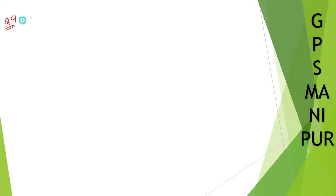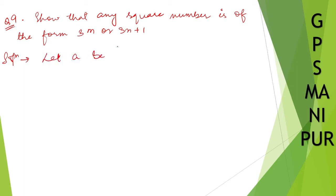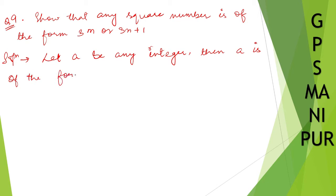Question number nine: show that any square number is of the form 3n or 3n plus 1. Solution: let a be any integer. Then a can be written in the form 3q, 3q plus 1, or 3q minus 1. If you need to prove something involving 3, then you use 3; if it involves 2, you use 2.